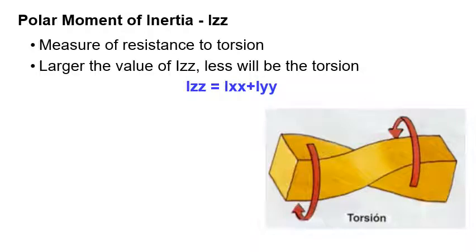The polar moment of inertia is another important property which tells us about the measure of resistance of the cross section to torsion. Greater the value of the polar moment of inertia, the lesser will be the torsion. If IZZ is large, the section has better resistance to torsion; if IZZ is small, the section has the least resistance to torsion.